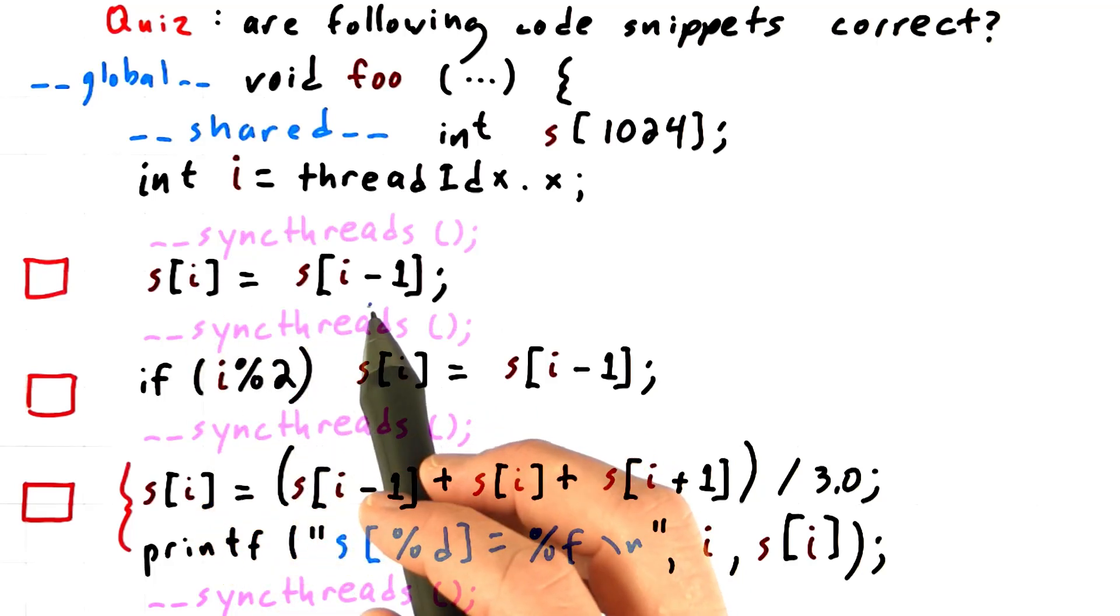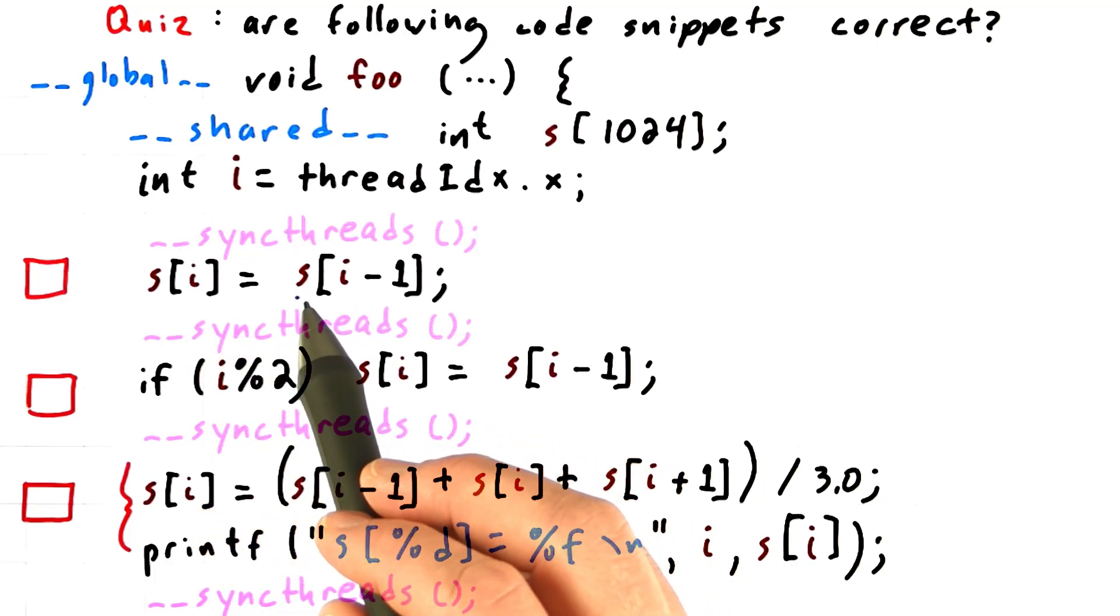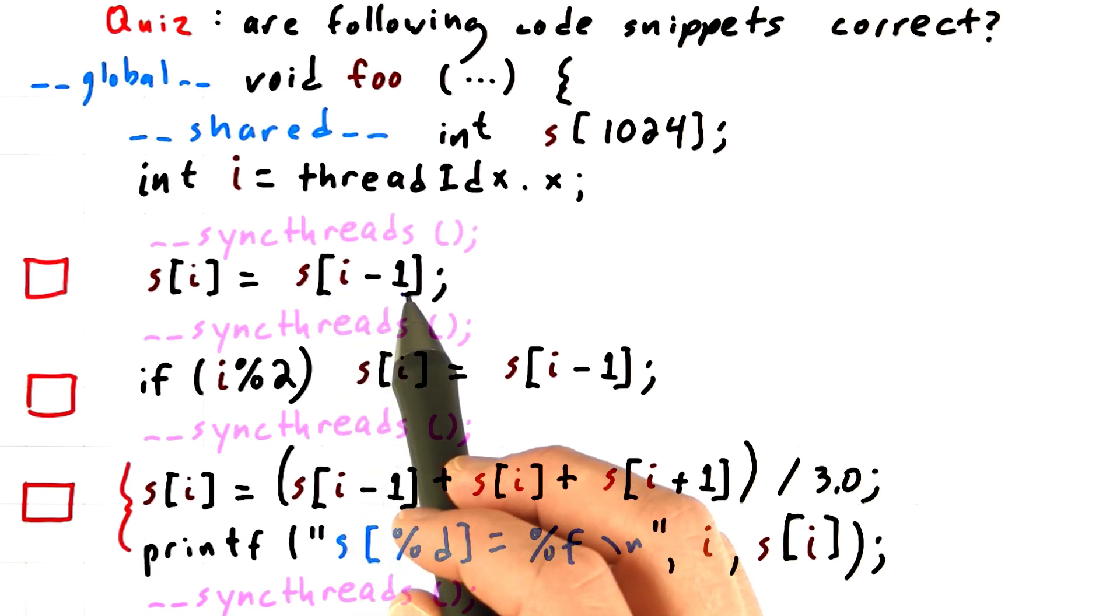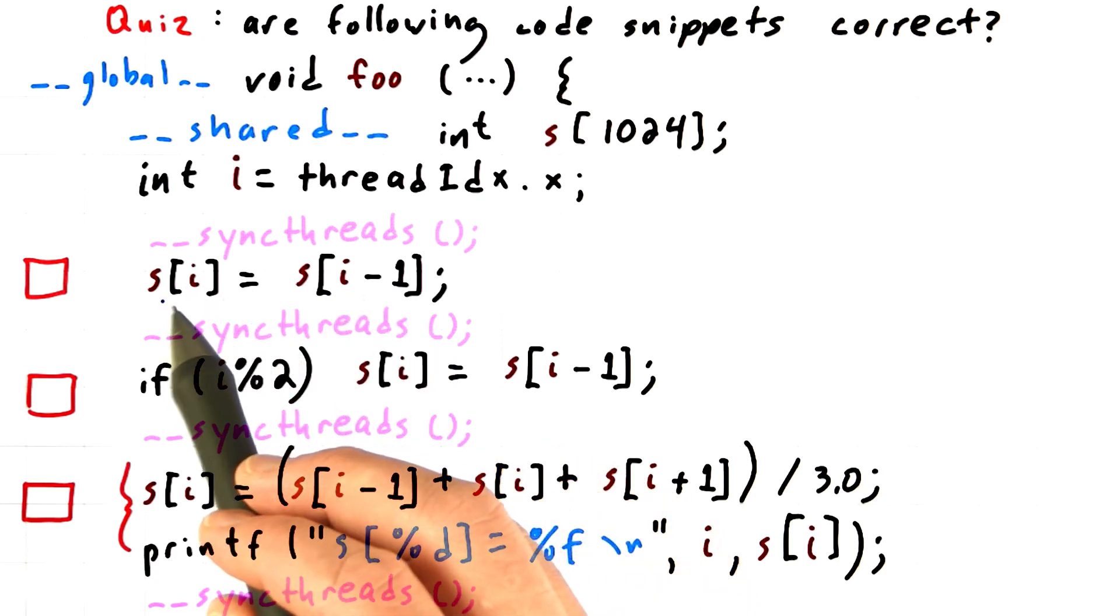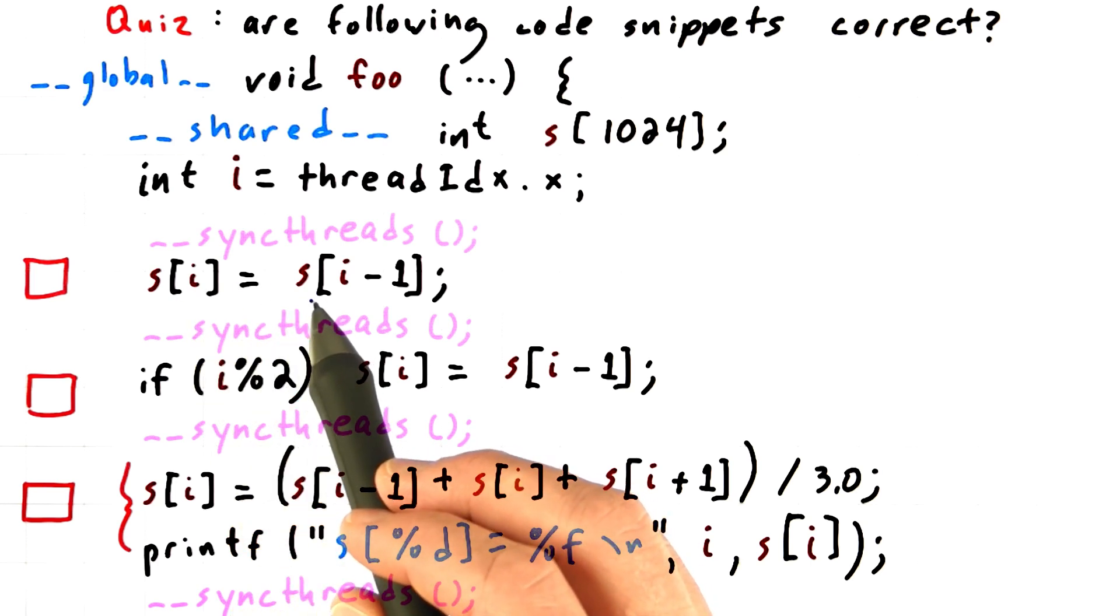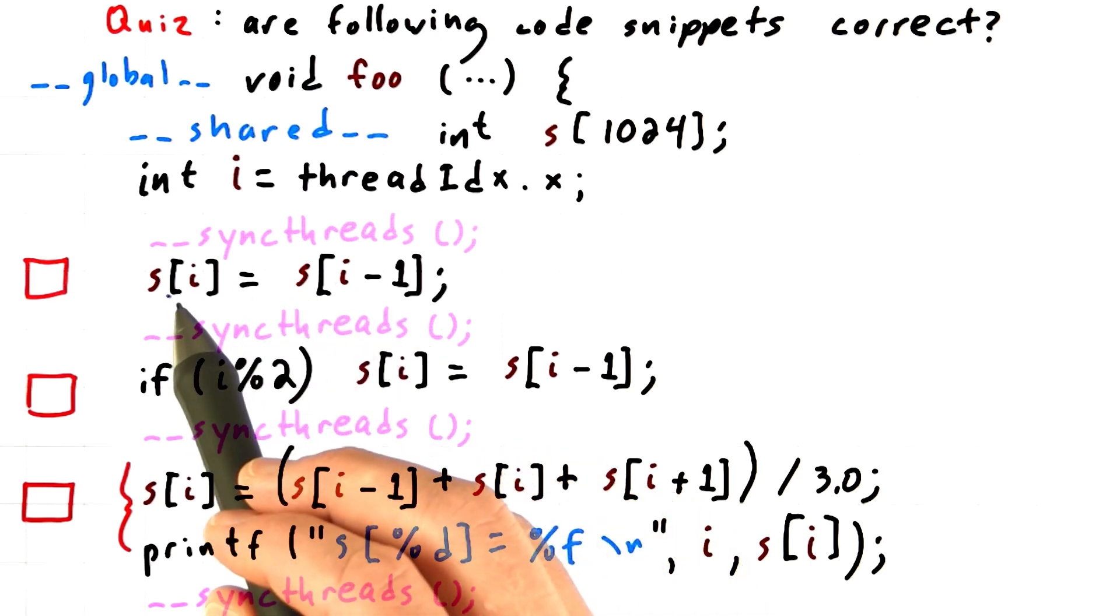So this first example is pretty much the same thing as we already saw. Right, every thread is going to be reading from s of i minus 1 and then writing the result into s sub i for its own value of i. And there's nothing in this statement to guarantee that all of these reads complete before any of these writes complete.